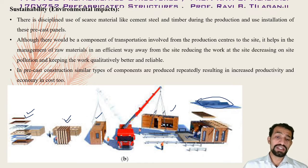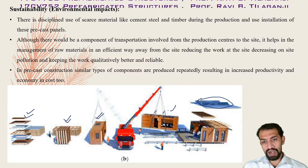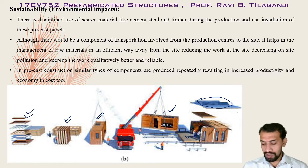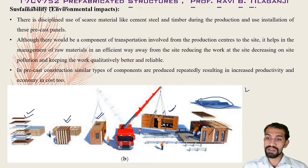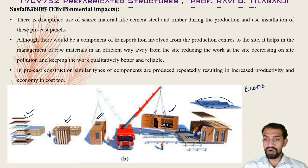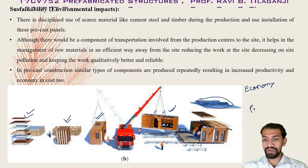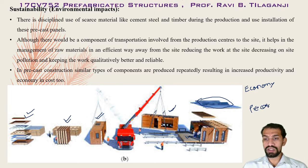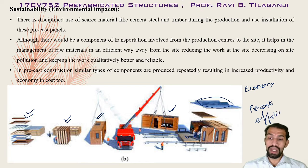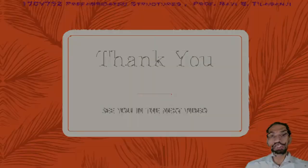Precast construction reduces site pollution while maintaining qualitative worth for the future. Similar types of components are produced repeatedly, resulting in increased productivity and economy. Material wastage is less, economy is improved, and we achieve greater efficiency in prefabricated structures. Prefabricated structures are the most efficient type of construction in this particular era. Thank you, see you in the next video.